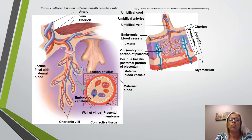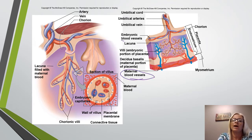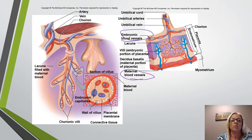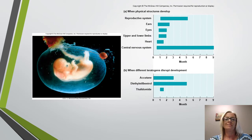The placenta has both a maternal portion and an embryonic portion as well. By eight weeks, we can actually recognize the embryo as human.